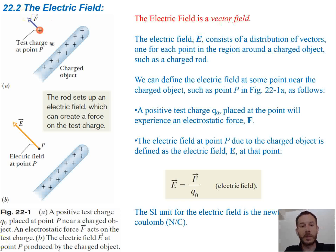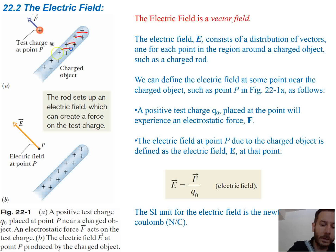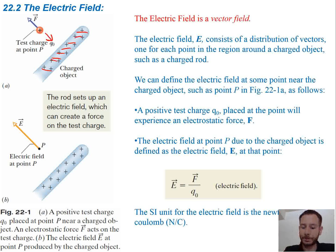Conversely, if you had a negatively charged rod, the direction of the electric field would be towards the rod.